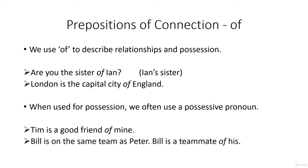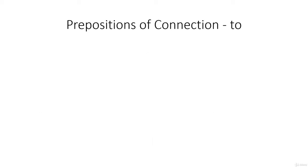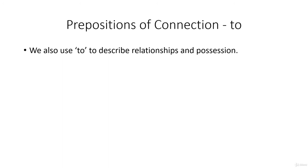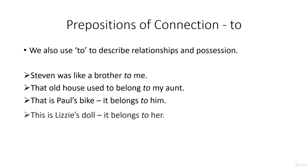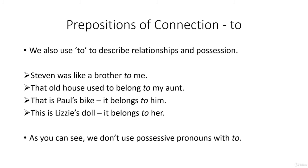Bill is on the same team as Peter, so Bill is a teammate of his. We also use 'to' to describe relationships and possessions. Stephen was like a brother to me. That old house used to belong to my aunt. That is Paul's bike — it belongs to him. This is Lizzie's doll — it belongs to her. As we can see, when we use 'to', we don't use possessive pronouns. So we say it belongs to him, but it is a bike of his, as we saw in the previous slide.